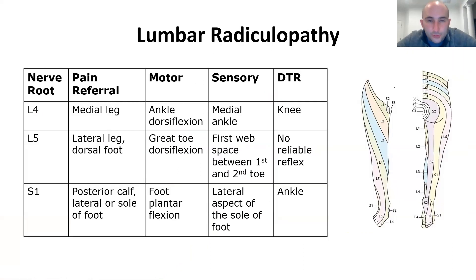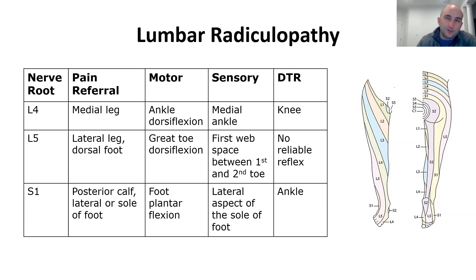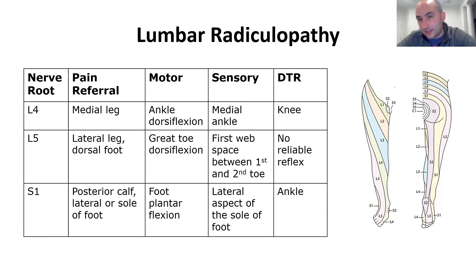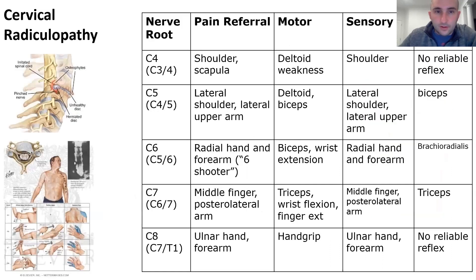For lumbar radiculopathy: L4 causes pain in the medial leg — groin region down to the knee. L5 causes pain in the anterolateral leg down to the top of the foot — the classic L5 pattern. S1 is classic sciatica: rear end pain going down the back of the leg to the bottom of the foot — classic for an L5-S1 disc. Deficits include: S1 — numbness in the bottom of the foot, weakness in plantar flexion; L5 — weakness in extensor hallucis longus (EHL) and ankle dorsiflexion; L4 — weakness in dorsiflexion.